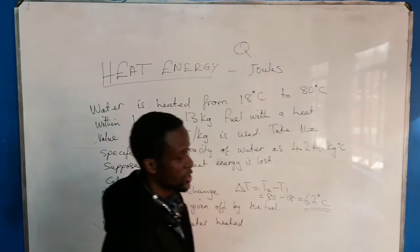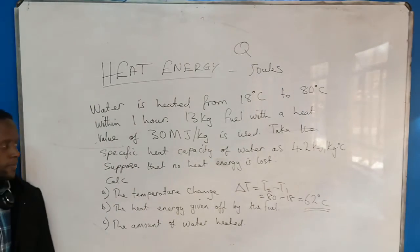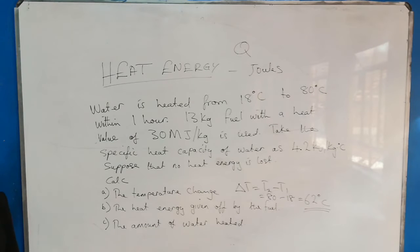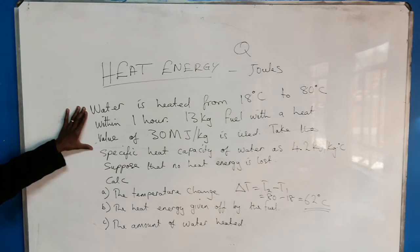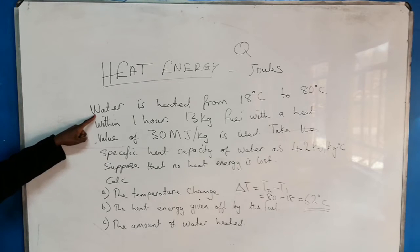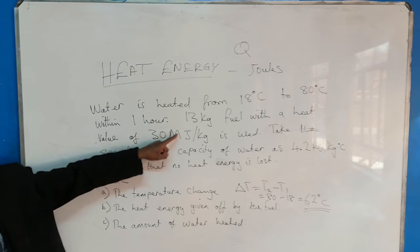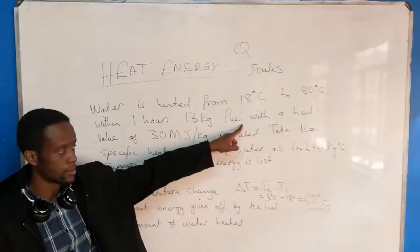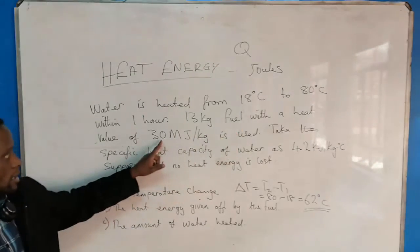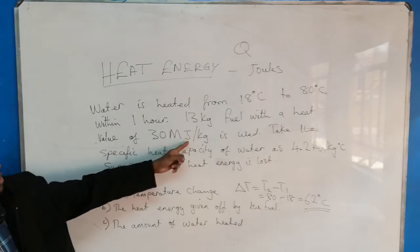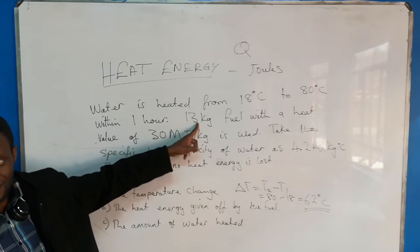That is how much change. Now for the heat energy given off by the fuel — when we read the statement, water is not our fuel. The fuel is the material we are burning. How many kilograms of the fuel? 13 kg. The heat value of that fuel is 30 megajoules per kg, and we've burned 13 kg.